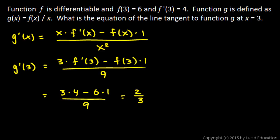So that's the slope at 3. And then I can also find g(3). Function g is f(x)/x, so g(3) will be f(3)/3. And f(3) is 6, so that's 6/3, which is just 2.